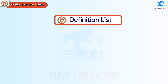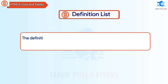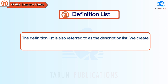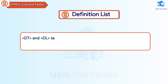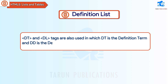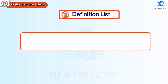Definition List. The Definition List is also referred to as the Description List. We create a Definition List using the dl tag. The dt and dd tags are also used, where dt is the Definition Term and dd is the Definition Description. Observe the following HTML code and its output.